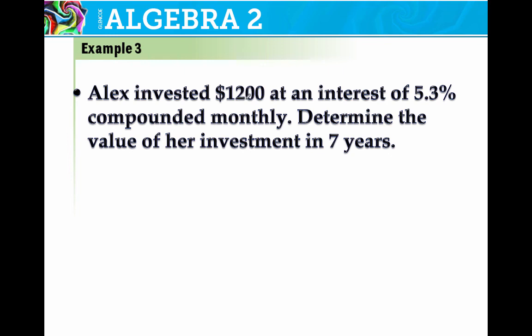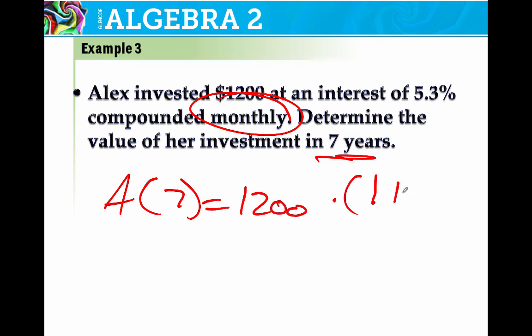Alex invested $1,200 interest rate compounded monthly. N is 12. Okay. So now I've got my amount after 7 years is equal to initial investment times 1 plus .053 divided by 12 raised to the 12 times 7. Plug it in. $1,737.60.